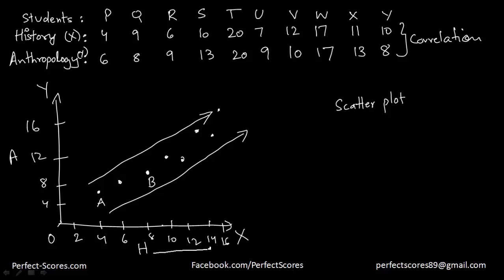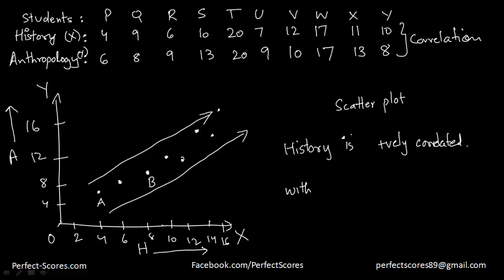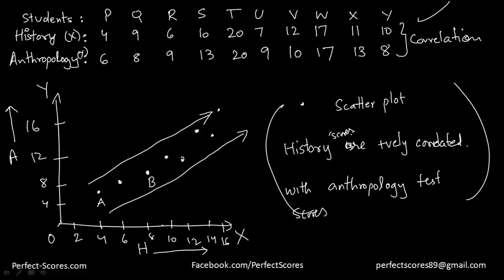As you can observe, as the history scores increase, the anthropology scores are also increasing. So from this scatter plot you can say that history test scores are positively correlated with anthropology test scores. If someone is good in history, then based on this data they are likely to be good in anthropology as well. This is exactly what correlation means and how we find it — we look at the direction the points are pointing towards.